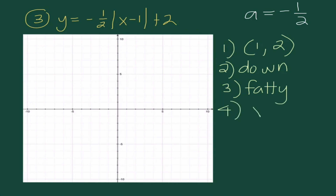Finally, our line of symmetry is a vertical line: X equals 1, matching the X value in our vertex. When graphing, I begin at 1, 2. Since it opens down and is fat with A equal to negative 1/2, I go down 1 and to the right 2 in both directions. Lastly, I draw my line of symmetry to show that the graph is symmetric.